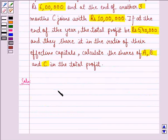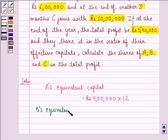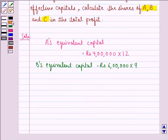First we find equivalent capitals of A, B and C. A's equivalent capital will be rupees 4 lakh into 12 because he has invested for the entire year. B's equivalent capital is rupees 6 lakhs into 9 because after 3 months he has joined and C's equivalent capital is rupees 10 lakhs into 6.